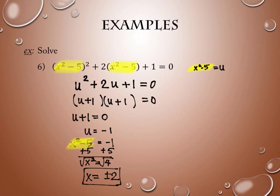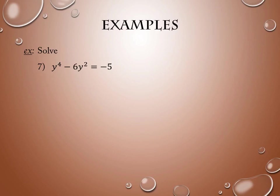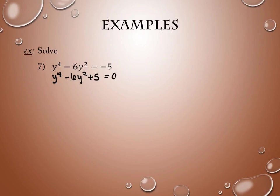I have one more example similar in nature. This one is less obvious than the last one that it can be treated this way. First, everything has to be on the same side. Now it's not a quadratic because I have a power of 4, but it kind of feels like one. I have a power of 4 and a power of 2 and then a constant — instead of a power of 2, a power of 1, and a constant. It feels very much the same.